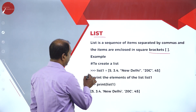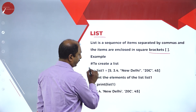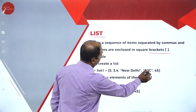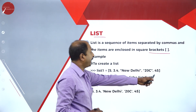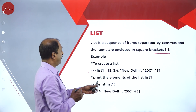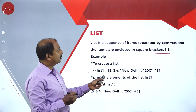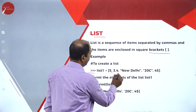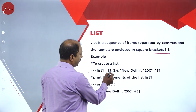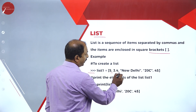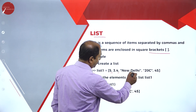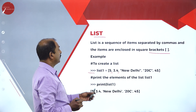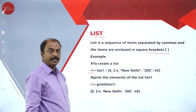For example, at the prompt: list1 equals square bracket 5, 3.4, 'New Delhi', '20C', 45 — close the square bracket. So this is a data type called a list. As per the definition, it is a sequence of items separated by comma. Here 5 is one item, then 3.4, then 'New Delhi', then '20C', and 45. This is the list data type.